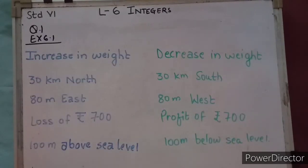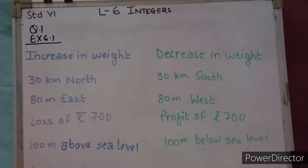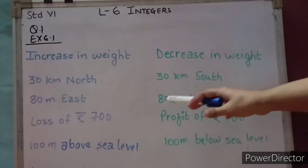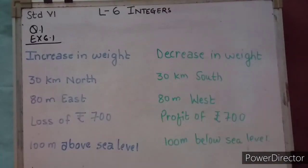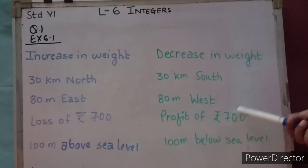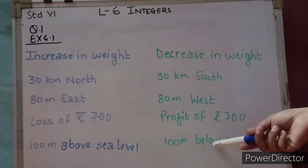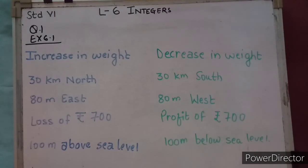Question number 1 of exercise 6.1: Write the opposite of the following. Increase in weight — the opposite of increase is decrease, so the answer is decrease in weight. 30 kilometre north — the opposite of north is south, so 30 kilometres south. 80 metre east — 80 metre west. Loss of rupees 700 — the opposite of loss is profit or gain, so profit of rupees 700. 100 metre above sea level — the opposite of above is below, so 100 metre below sea level.